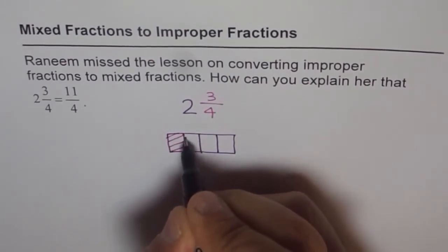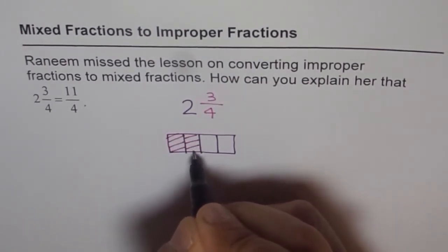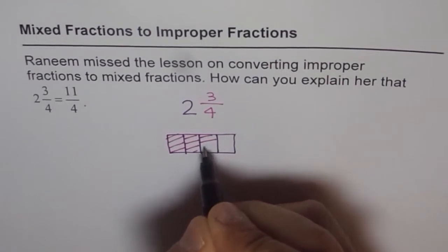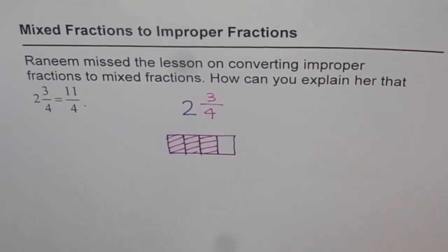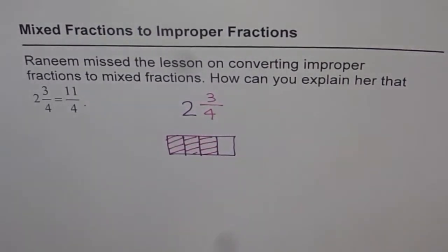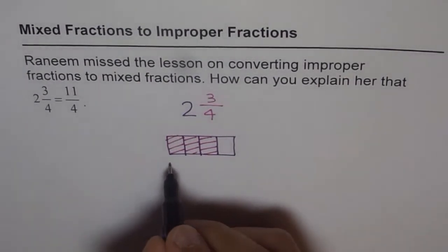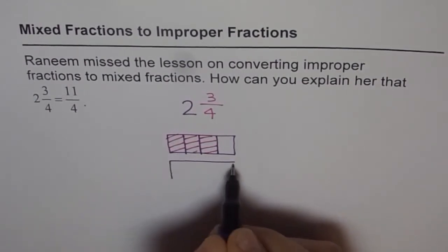This is 1, then we have 2 and 3. That is 3 fourths. Now, how about 2? Two wholes means the same thing but 2 wholes. That means all together, so you take them all.